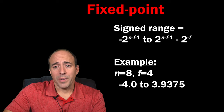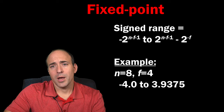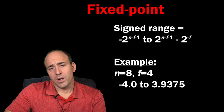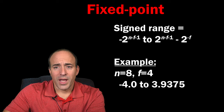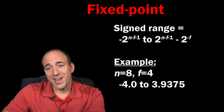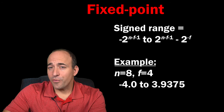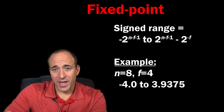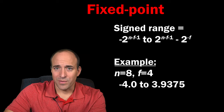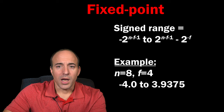With 2's complement, the range of values you can represent are from negative 2 raised to the power of n minus f minus 1, where n is the number of bits and f is the number of fractional bits, to 2 raised to the power of n minus f minus 1, minus 2 raised to the negative f. In this example, the range would be negative 4 on the low end to 3.9375 on the high end, because on the high end we're subtracting 1/16, which is 0.0625.